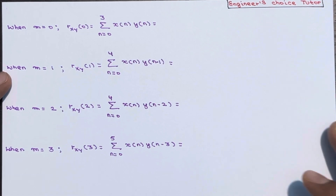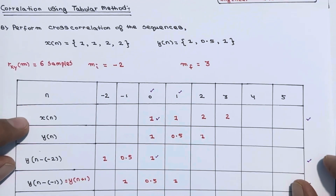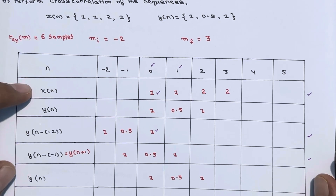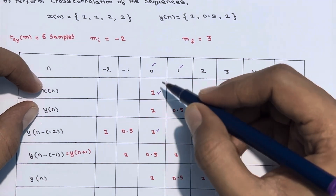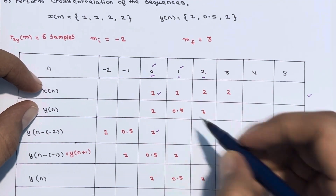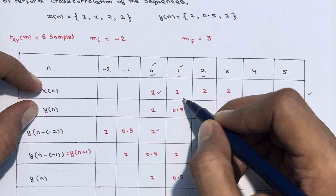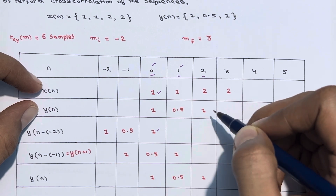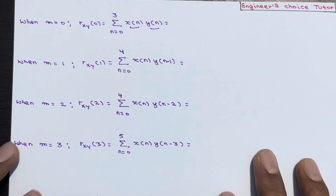When m = 0, we need x(n) times y(n). The common instances are at n = 0, 1, and 2. So 1 times 1 is 1, plus 1 times 0.5 is 0.5, plus 2 times 1 is 2. Overall that gives 3.5. Therefore rxy(0) = 3.5.